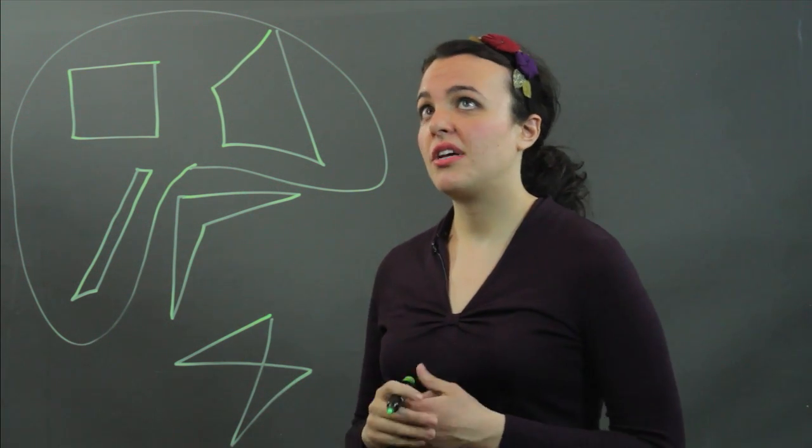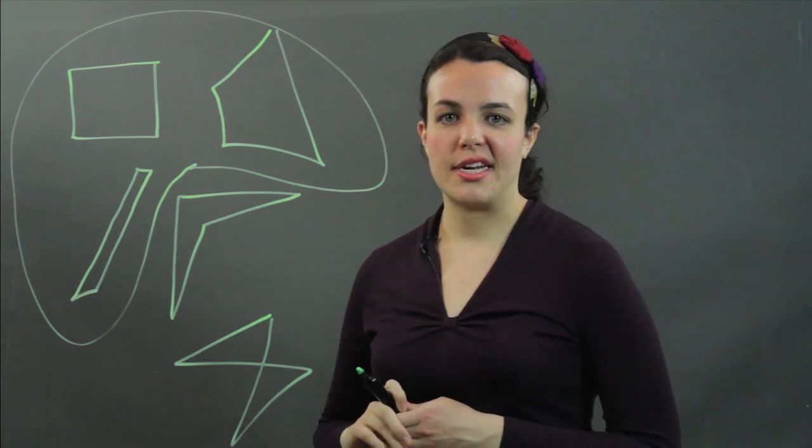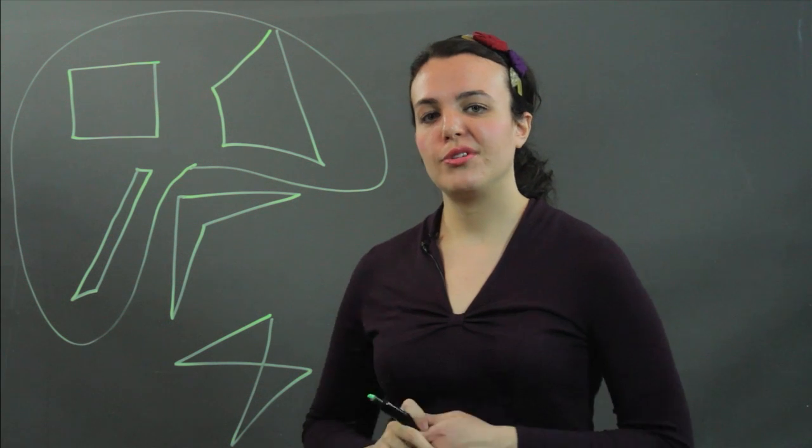So that is just how you make a quadrilateral. Draw four sides. Make sure they connect on a closed path. I'm Julia. Thank you.